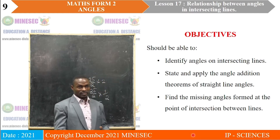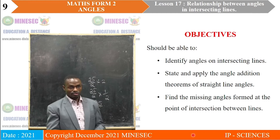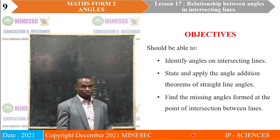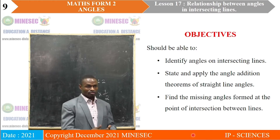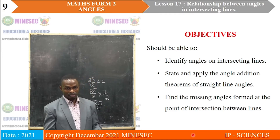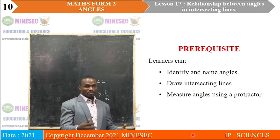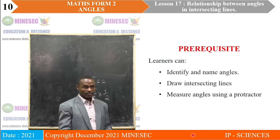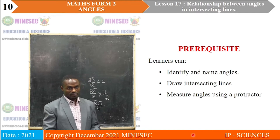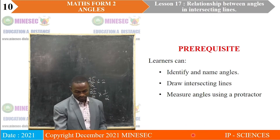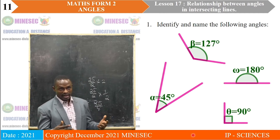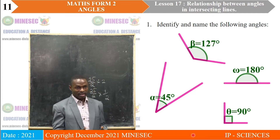At the end of this lesson, you should be able to identify angles in intersecting lines, state and apply the angle addition theorems of straight lines, and find the missing angles formed at the point of intersection between lines. As a prerequisite, learners can already identify and name angles, draw intersecting lines, and measure angles using a protractor.